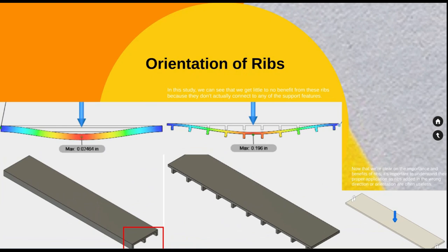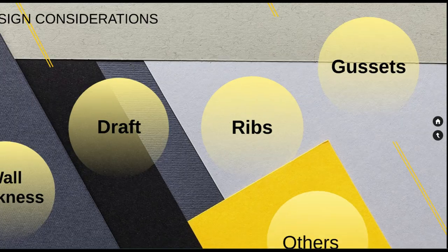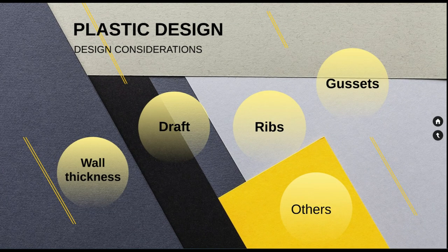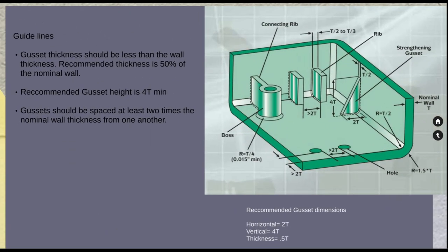The fourth important parameter to be considered while designing plastics is gussets and bosses. In this image you can see two bosses on the left and one boss on the right. The left side two bosses are supported by ribs and the right side boss is supported by four gussets. We will look into the guidelines for gussets.